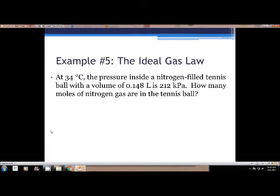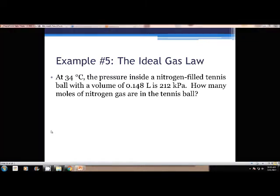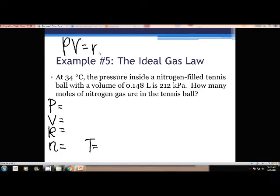So we're going to do those, and then we'll finish up for today. So the first one, at 34 degrees Celsius, the pressure inside a nitrogen-filled tennis ball with a volume of 0.148 liters is 212 kilopascals. How many moles of nitrogen gas are in the tennis ball? So I'm just listing everything out for our equation, because we're using the PV equals nRT equation to plug in here.